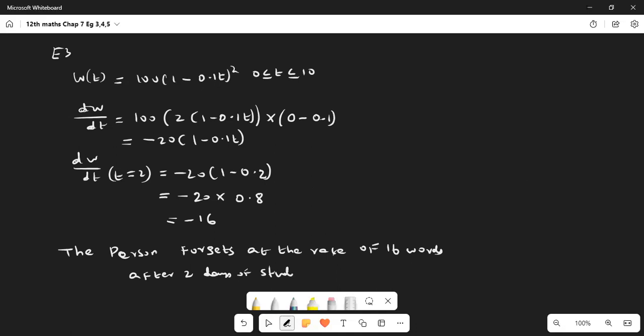Example 4: A particle moves so that distance traveled is according to the law s(t) = t³/3 - t² + 3t. At what time are the velocity and acceleration zero?